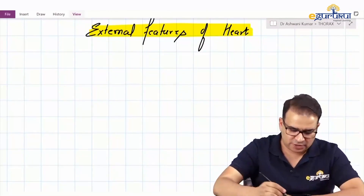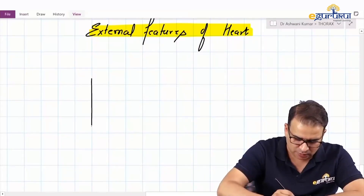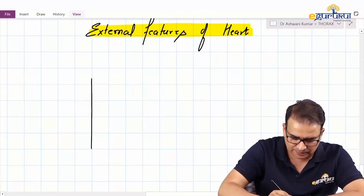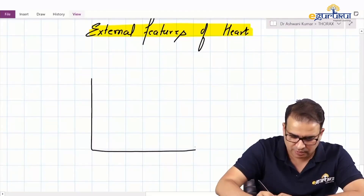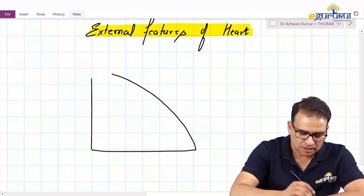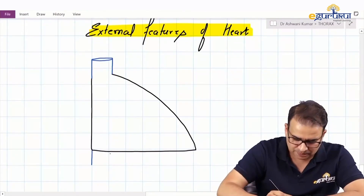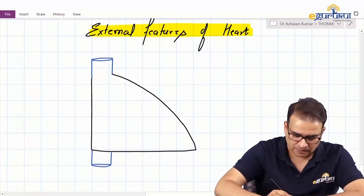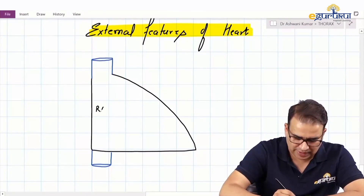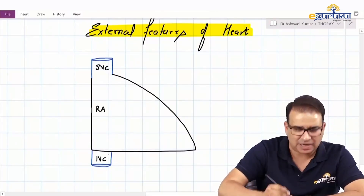To understand the external features of the heart, let's draw a very simple and schematic picture. So this here is the right border, the vertical right border of the heart. Here is the inferior border, the apex and the left border. As we know, the superior vena cava and the inferior vena cava are entering along the right border only into the right atrium, which lies along the right border only.